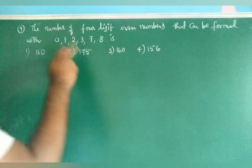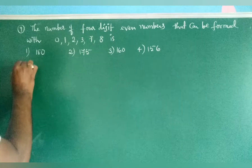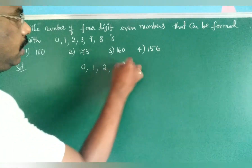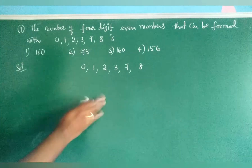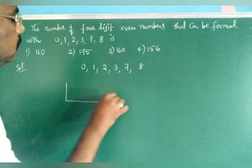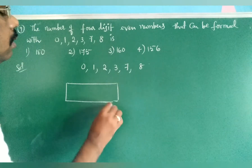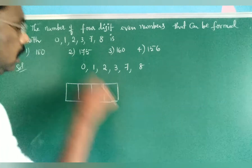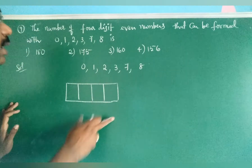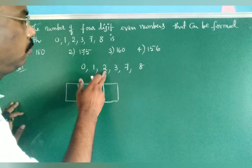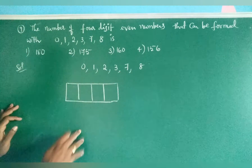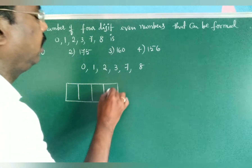Problem 2: find the number of 4-digit even numbers that can be formed with the digits 0, 1, 2, 3, 7, 8. We take 4 places. The unit place must be filled with an even digit: 0, 2, or 8.